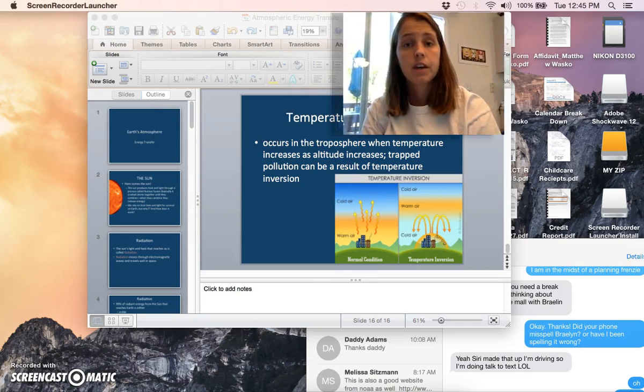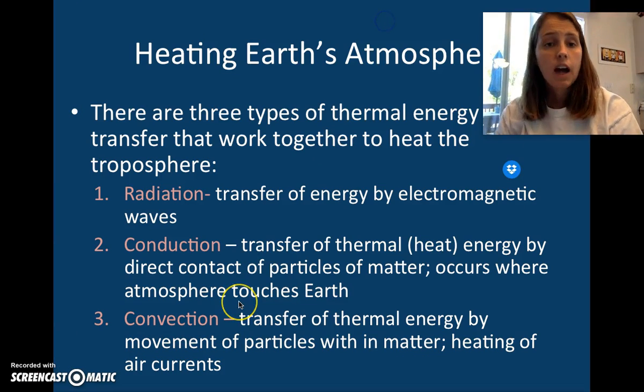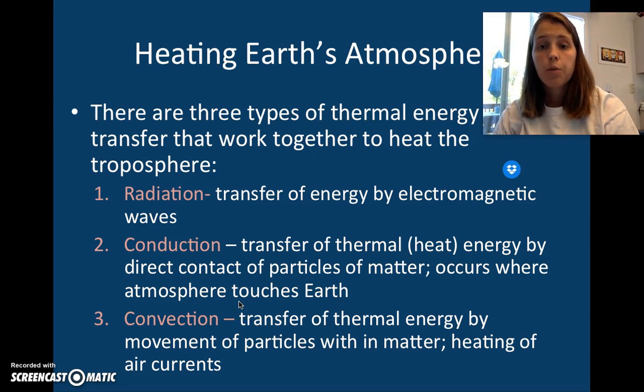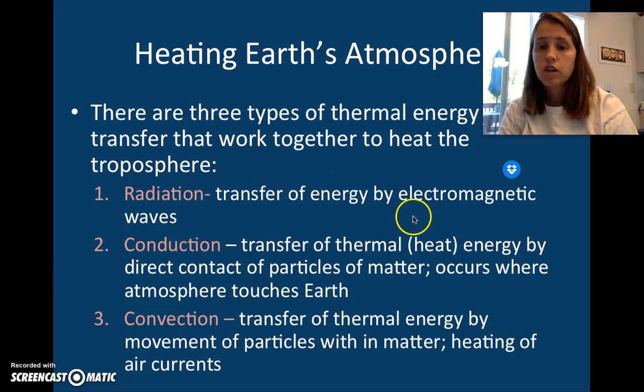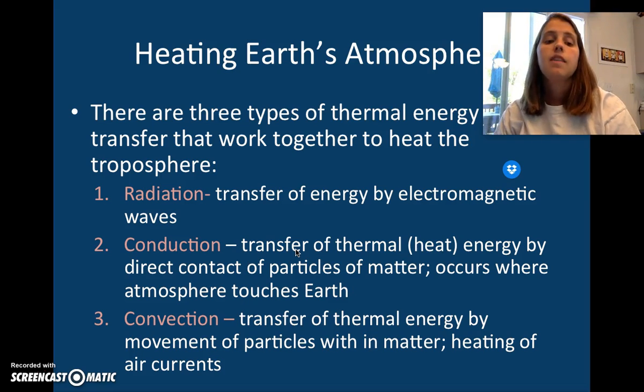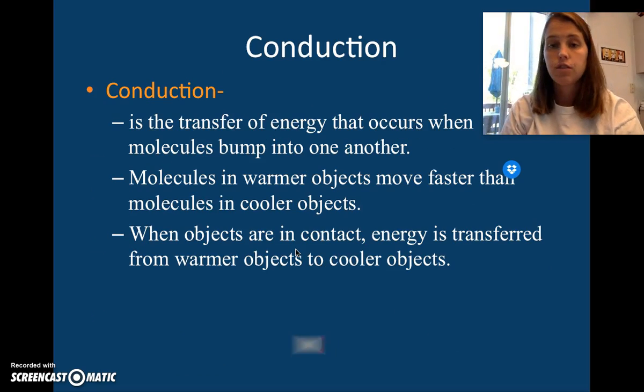Heating Earth's atmosphere. There are three types of thermal energy transfer that work together to heat the troposphere. We have radiation, the transfer of energy by electromagnetic waves. We have conduction, the transfer of thermal energy by direct contact. Conduction is direct contact—you can think of the D, conduction, direct contact of particles and matter, and occurs everywhere the atmosphere touches the Earth. And then we have convection, the transfer of thermal energy by the movement of particles within matter. The heating of air currents, if you will.